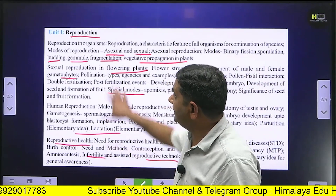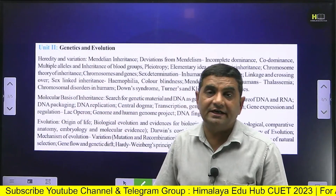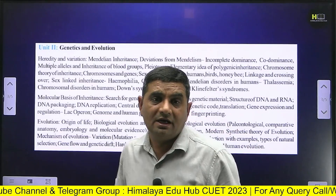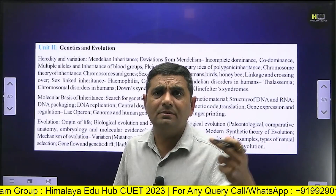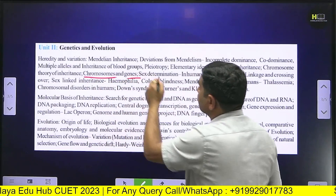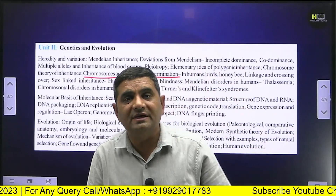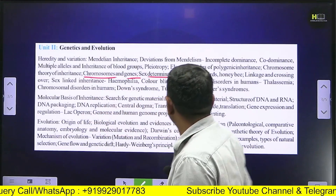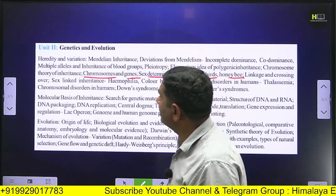The second unit covers genetics and evolution. We will start with Mendel's laws, co-dominance, and the chromosome-gene relationship. Sex determination, including in honey bees, will be covered, along with linkage and crossing over.